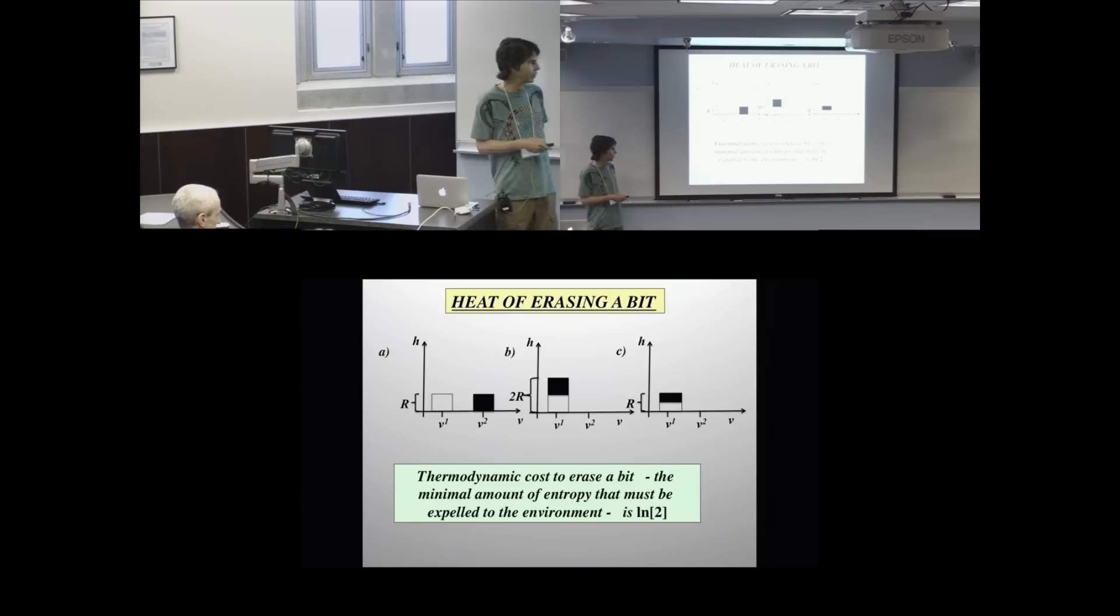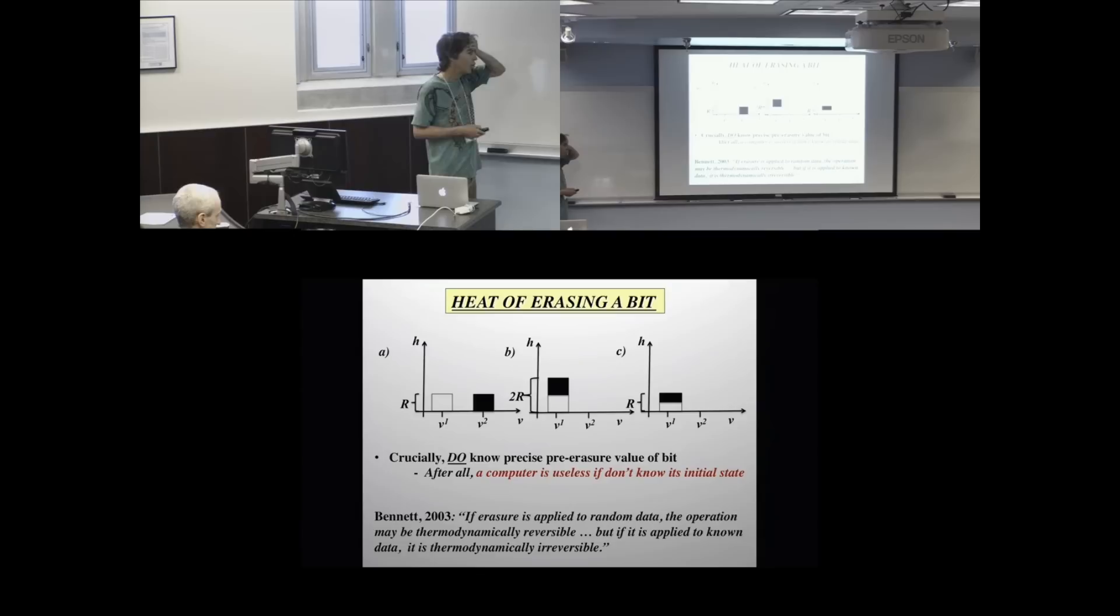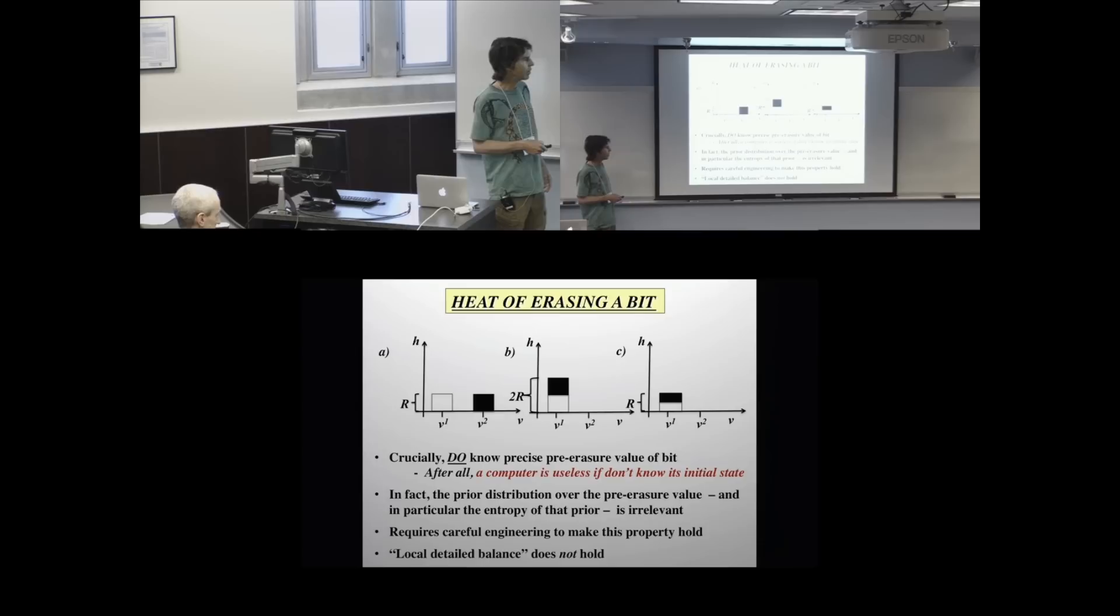That's how foundational this is. There's no Schrodinger's equation, no QCD, nothing underneath this. It's very, very general. One thing that some aspects of this that are very crucial: this works only when you actually know the pre-erasure value of the bit. This computer would be useless if I did not know its state before I actually ran it. Who cares about a program where you don't know its initial state? There's a bunch of confusing literature where people actually use the word Landauer limit to refer to scenarios in which you actually do not know anything about the pre-erasure state, but it's important that you do know it. In fact, the prior probability distribution over the pre-erasure value, and in particular its entropy, is irrelevant. The entropy of the initial configuration of your computer before you run it does not have anything at all to do with the thermodynamic heat that's actually being generated. Entropy is going to be all through this, but not that entropy.